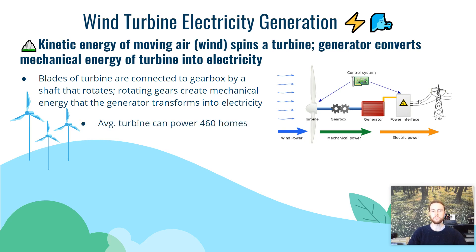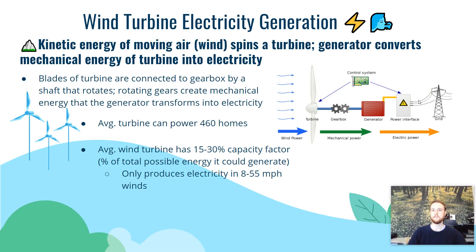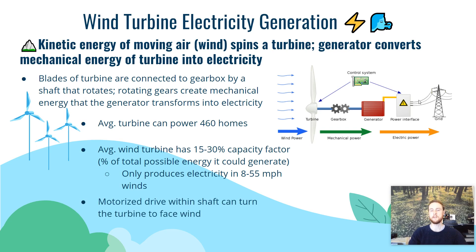The average turbine can power up to 460 homes, though it's not as consistent as it might seem. The capacity factor of a wind farm — the percentage of total potential output actually produced — ranges from 15 to 30%. This is because about 90% of the time they're not producing electricity. They can only produce electricity when facing into the wind at speeds of 8 to 55 miles per hour. Turbines often have a motor in the shaft that positions them to face most directly into the wind to optimize electricity production.